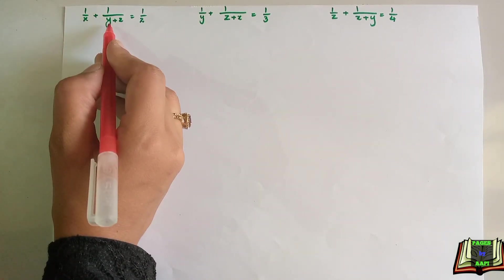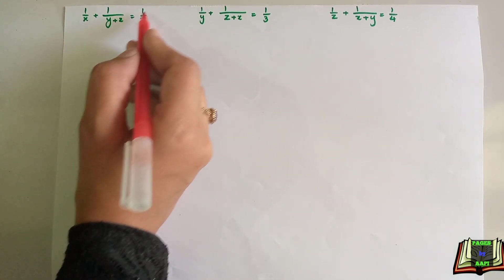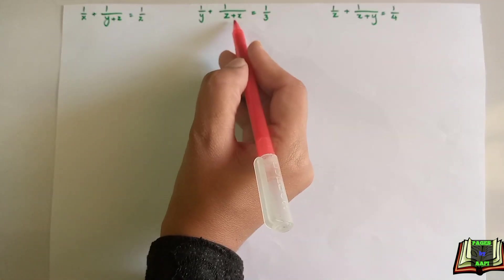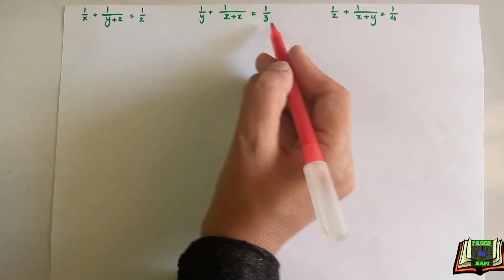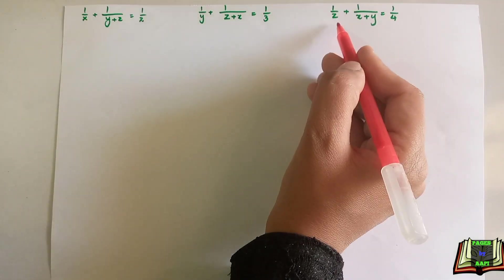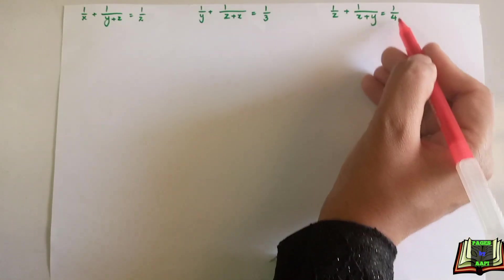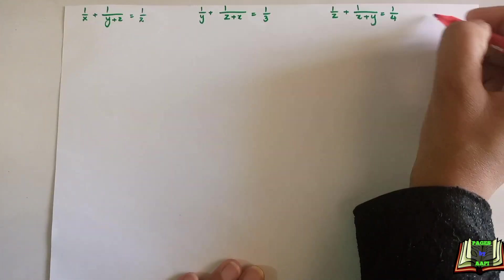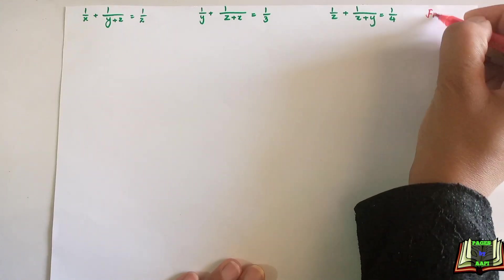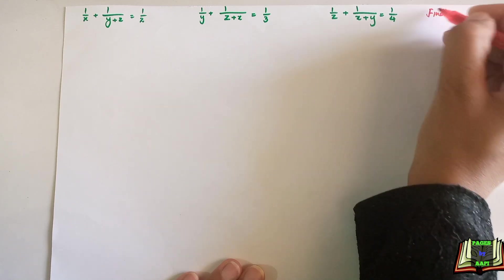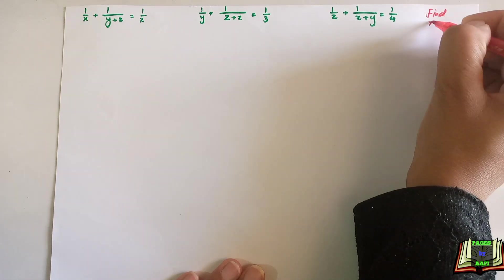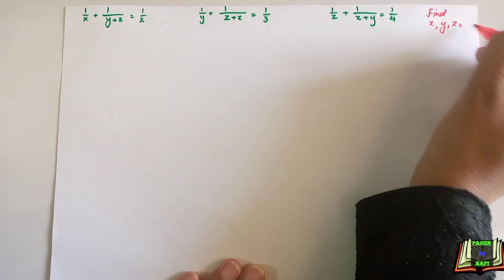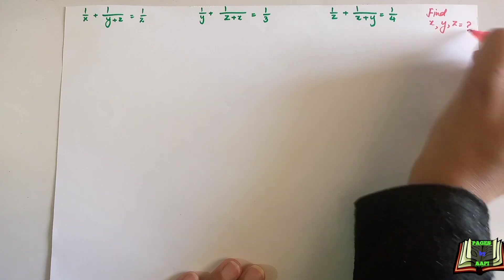The problem is: 1 over x plus 1 over (y plus z) is equal to 1 by 2; 1 over y plus 1 over (z plus x) is equal to 1 by 3; 1 over z plus 1 over (x plus y) is equal to 1 over 4. We have to find out x, y, and z.